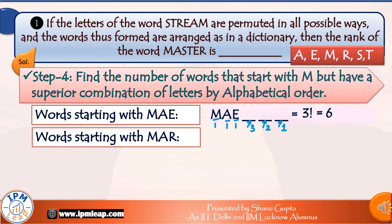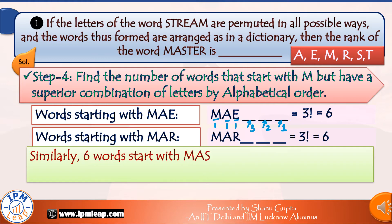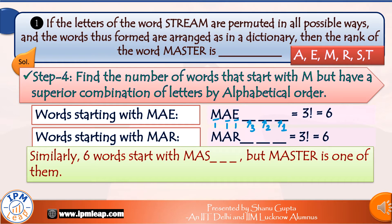After the six words starting with M-A-E, we will have words starting with M-A-R — again 6 words. After this comes the turn of M-A-S. How many words start with M-A-S? Six words again. But master is one of them, so when calculating the rank of master, we should not include all six. Rather, we should consider only those words starting with M-A-S that come prior to master in dictionary order.